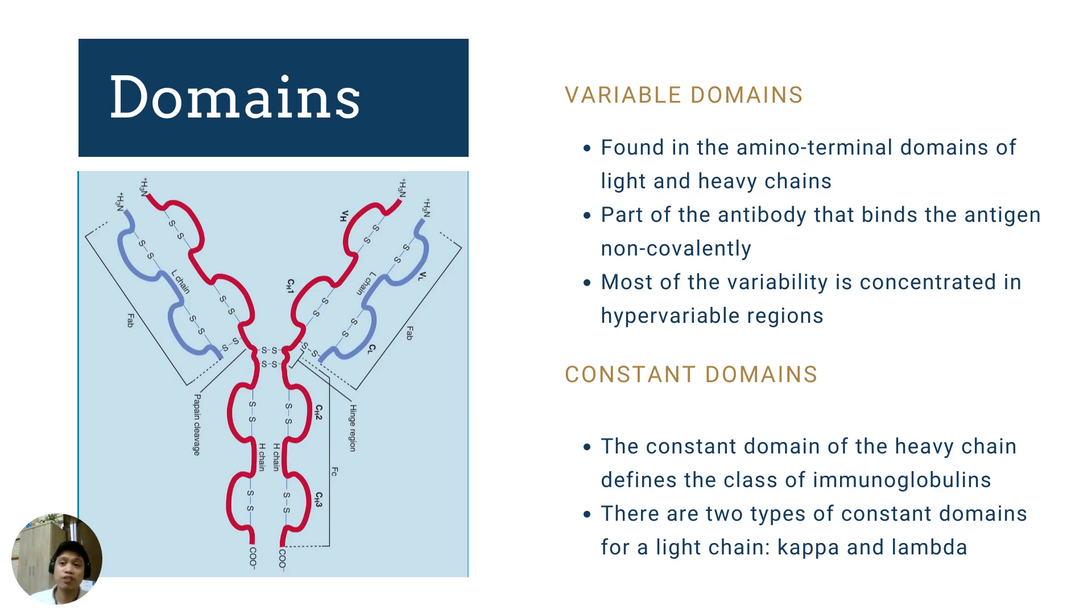There are three hyper-variable regions in the variable domain of the light chain, the blue one, and up to four hyper-variable regions on the heavy chain, the red one. The term hyper-variable denotes that these portions of the antibody are able to create highly different structures and orders of amino acids so that they match the also highly different types of antigens.